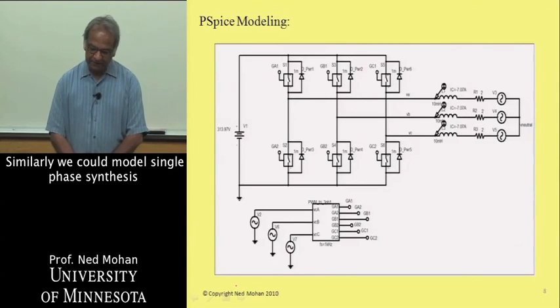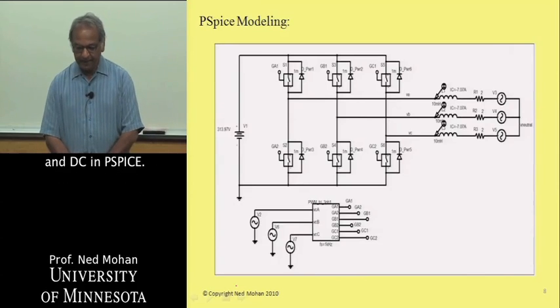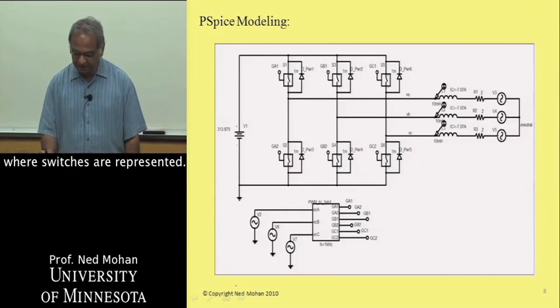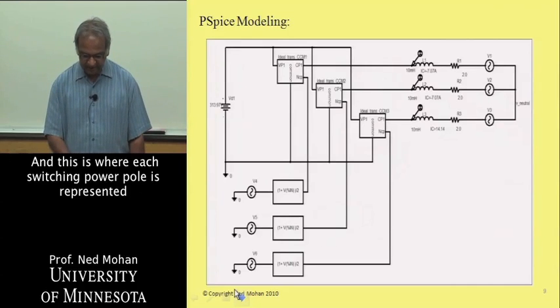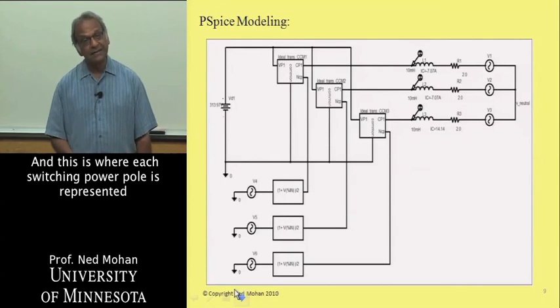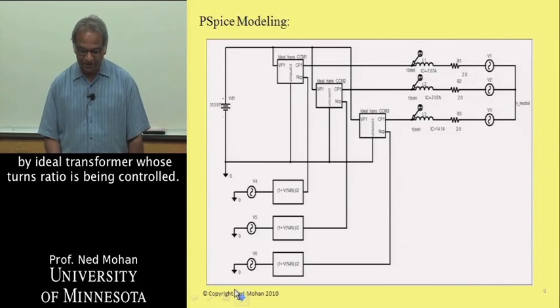Similarly, we could model single-phase synthesis and DC in P-SPICE. This circuit is for three switching power poles where each switching power pole is represented by its average as an ideal transformer whose turns ratio is being controlled.